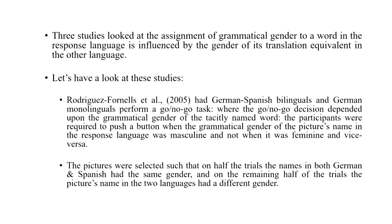There are three studies that looked at the assignment of grammatical gender to a word in the response language and whether it is influenced by the gender of its translational equivalent. Rodriguez-Fornels and colleagues had German-Spanish bilinguals and German monolinguals perform a go/no-go task where the decision depended upon the grammatical gender of the tacitly named word. Participants were required to push a button when the grammatical gender of the picture's name in the response language was masculine and not when it was feminine, and vice versa. The pictures were selected such that on half of the trials the names in both German and Spanish had the same gender, and on the remaining half the pictures had different genders in the two languages.